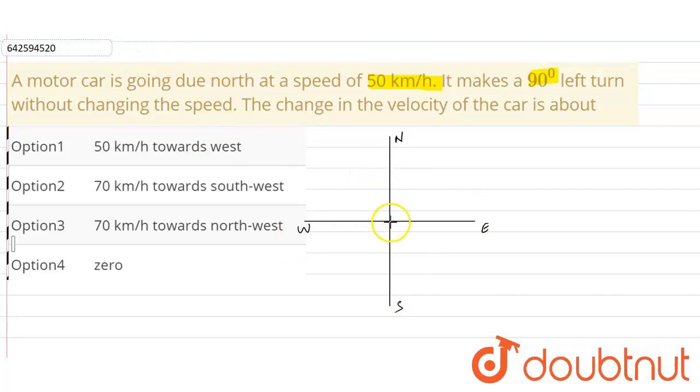Okay, so here velocity is given as 50 kilometer per hour. Now the car makes a turn in the 90 degree in the left, so this will be in the 90 degree left, so it will go in the west direction, correct.